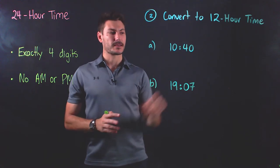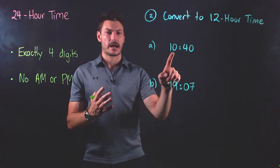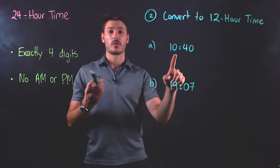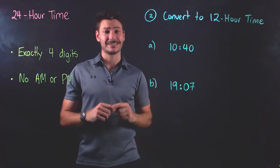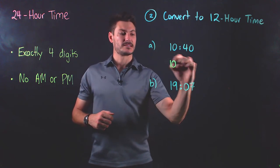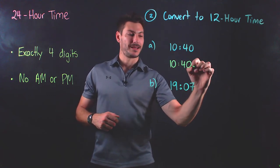So in part A here, the 10 which represents the hours, this goes hours minutes, the hours is less than 12. And so all we have to do is rewrite it exactly as it is, but with a.m. on the end. So the answer here is 1040 a.m.